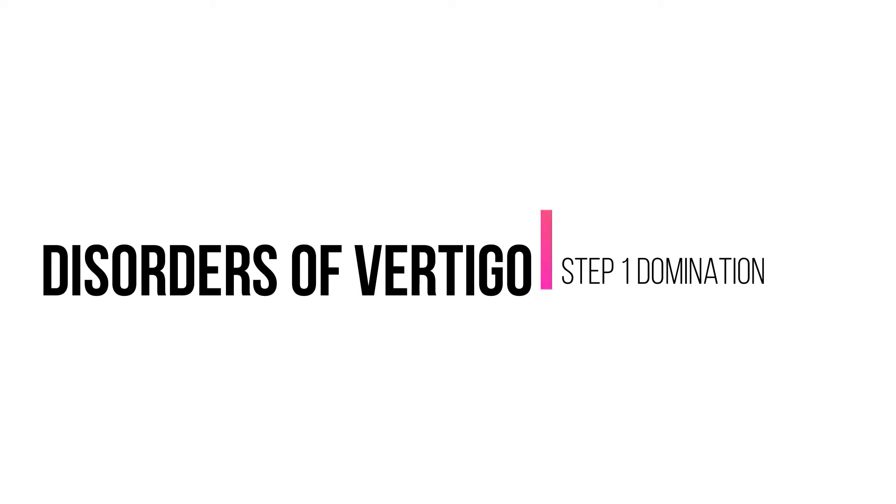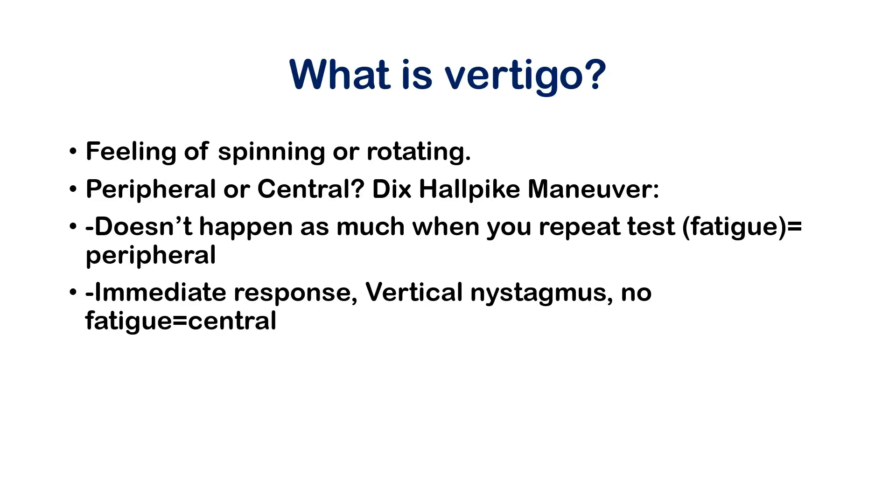Today we're going to be looking at disorders of vertigo, specifically peripheral vertigo disorders. There are two subclasses — central and peripheral — and we'll talk about what vertigo is, how to distinguish whether it's central or peripheral, and then look at the various types of peripheral vertigo and be able to distinguish between the different types.